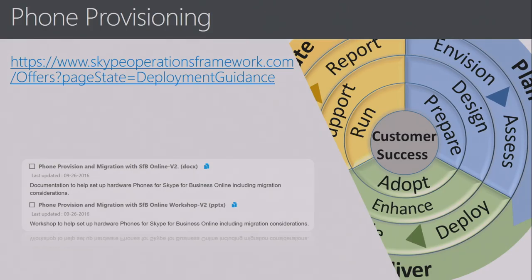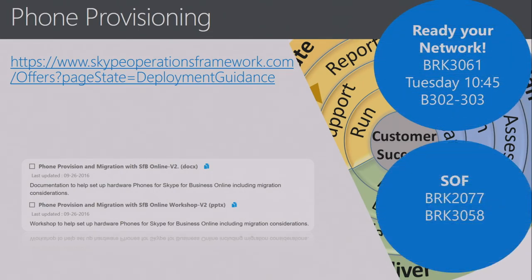If you go to the Skype Operations Framework link, you'll see two documents for currently available phones — Polycom phones: how to provision, how to do network assessment, how to plan your deployment. For example, if you currently have an Avaya, Cisco, or Alcatel system with quality of service deployed in your network, how do you add another system with QoS alongside it? There are two related sessions: 'Ready Your Network' from Tuesday — you can listen to the recording — and two Skype Operations Framework sessions coming up on Friday, one overview and one technical drill-down. There are also training videos and recordings to review.